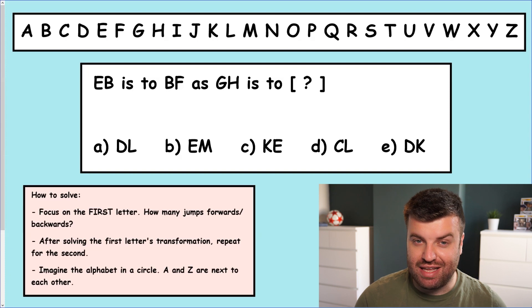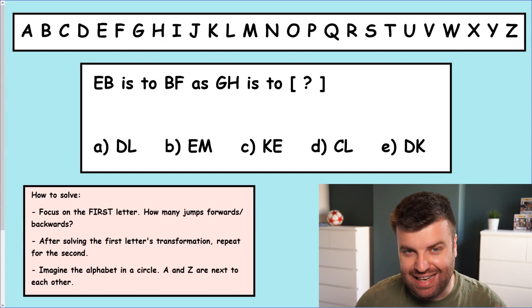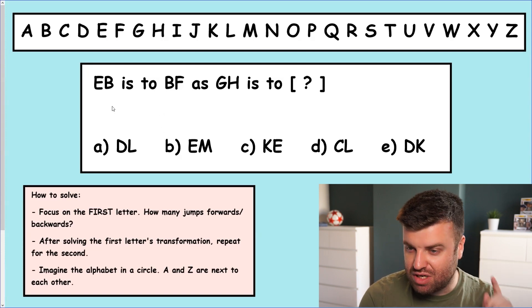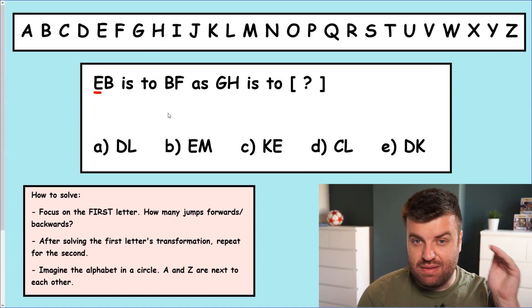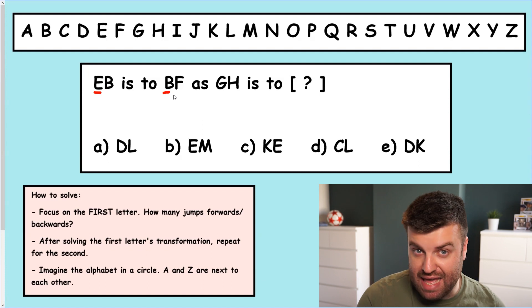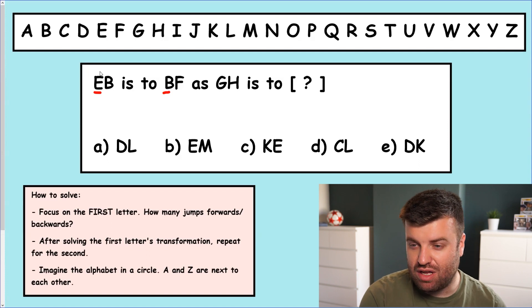Now you might be thinking you already know what to do. And if you look at the pink box, the first point is to look at the first letter. We're going to isolate them just like we did last time. So here we have E. So EB is to BF. So that E changed to a B. So let's just stop there for a second and not get too bogged down by the other letters.